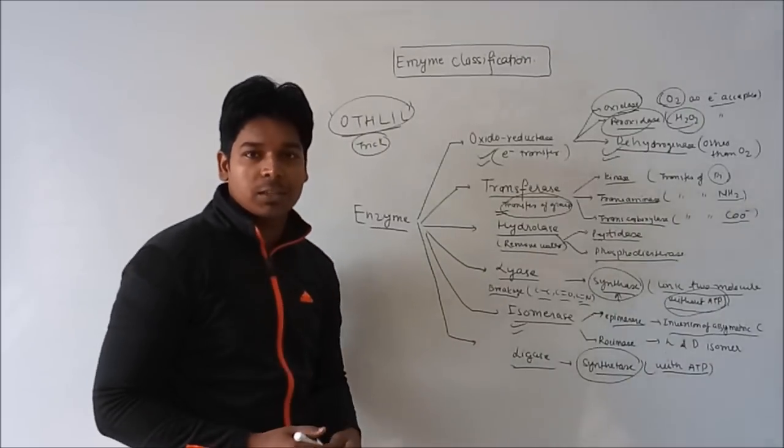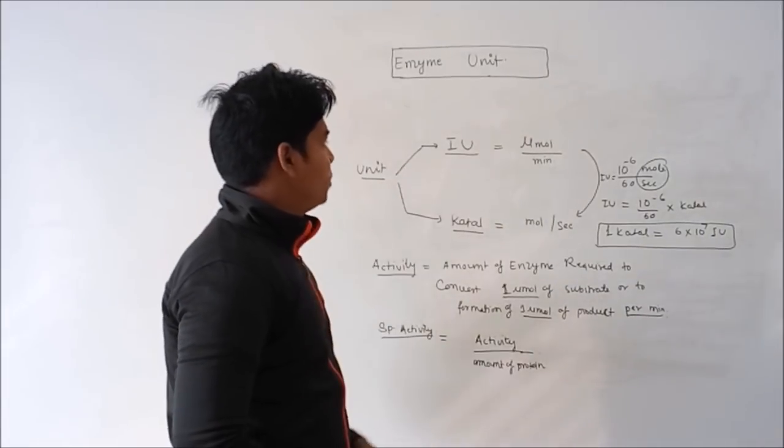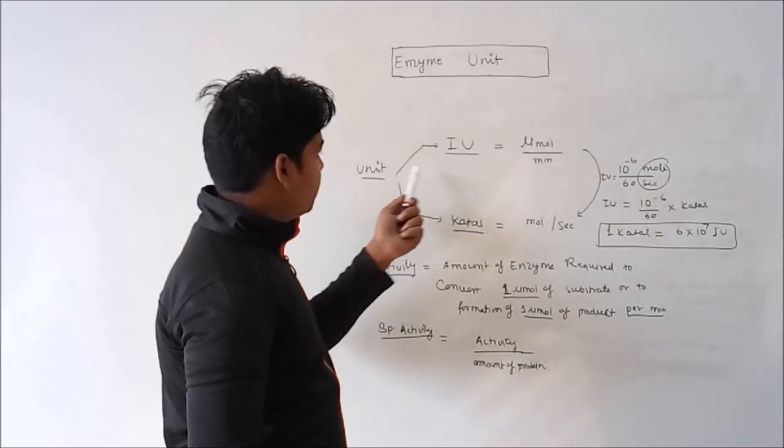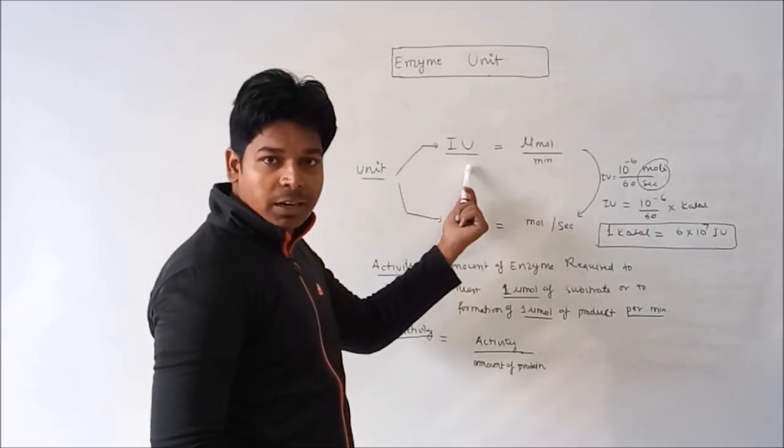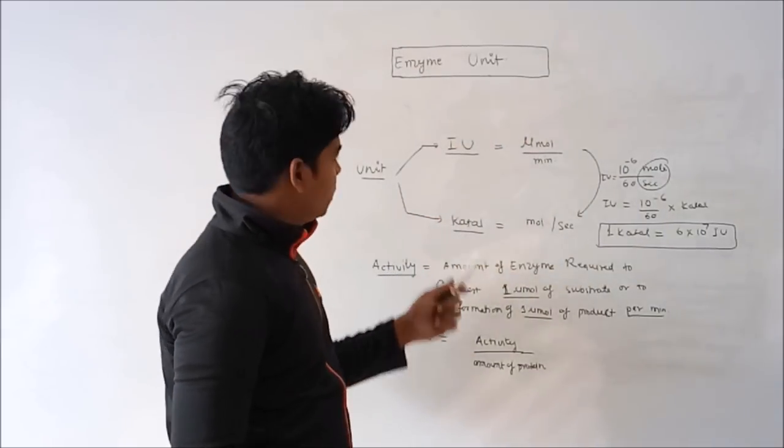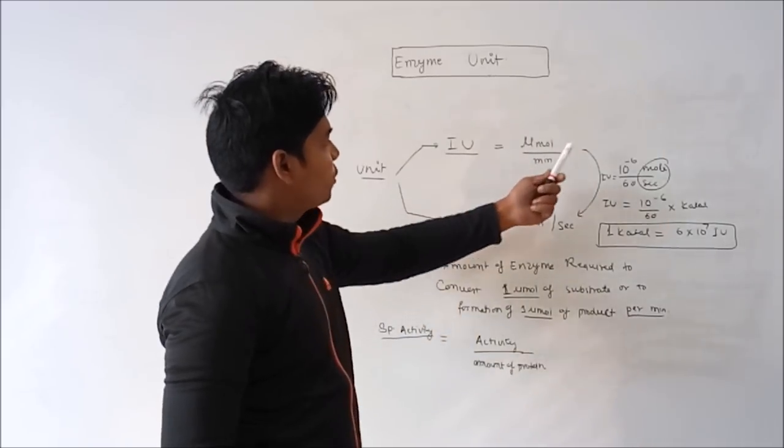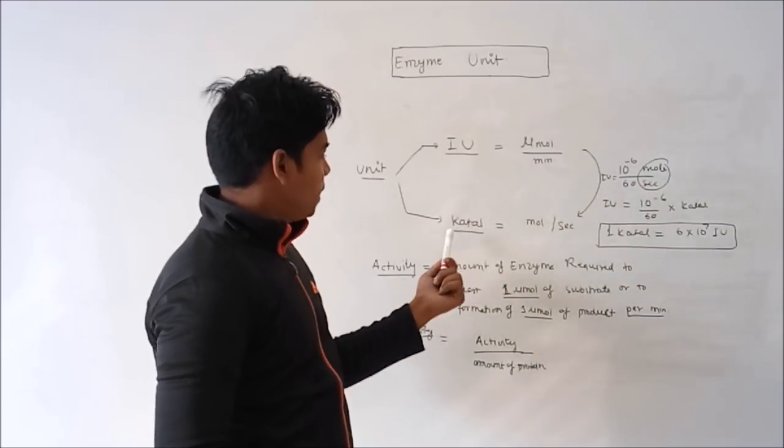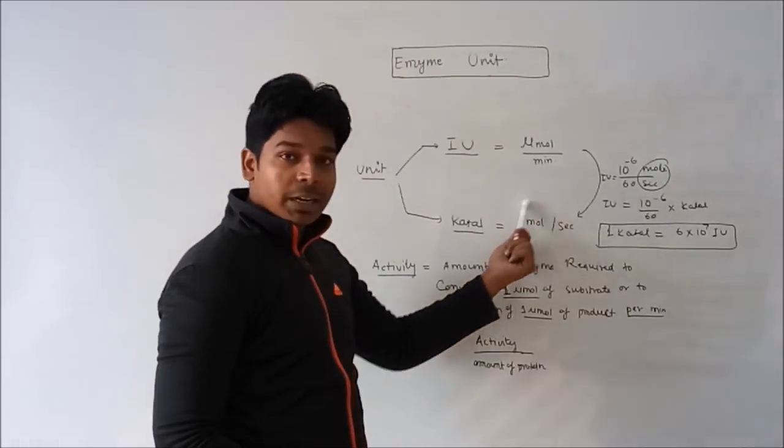This is the overview of enzyme classification. So let's discuss enzyme unit. Unit of enzyme can be of two types: that is international unit or katal. The international unit defines the micromole of substrate per minute, and the katal defines as mole of substrate per second.